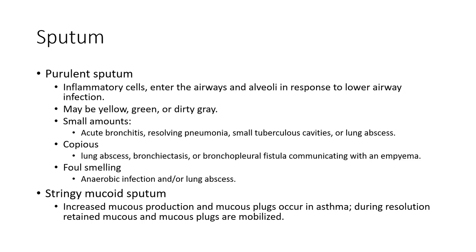Purulent sputum — with a really bad infection — can change colors: yellow, green, or dirty gray. Small amounts may appear with acute bronchitis when airways are irritated. Copious amounts suggest really gnarly bacterial infections with highly productive mucus. Foul-smelling sputum can indicate anaerobic infection — which creates foul-smelling gases — or a really bad lung abscess. Stringy mucoid sputum — think of that scene from Big Daddy — is something patients with asthma attacks can attest to: really stringy, almost proteinaceous mucus.